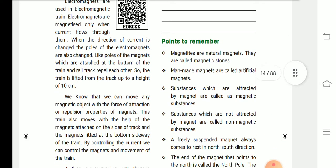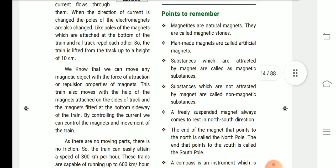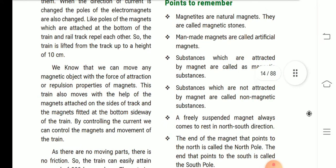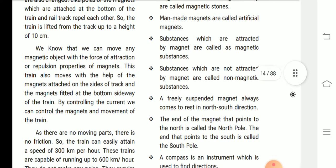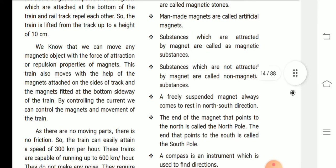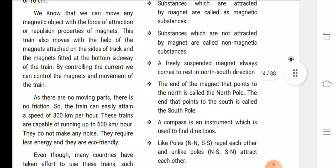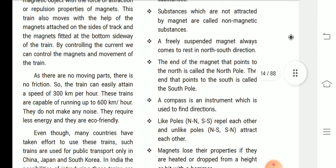Now that lesson is over, children. Next, points to remember. Magnetites are natural magnets. They are called magnetic stones. Man-made magnets are called artificial magnets. Substances which are attracted by magnets are called magnetic substances. Substances which are not attracted by magnets are called non-magnetic substances.